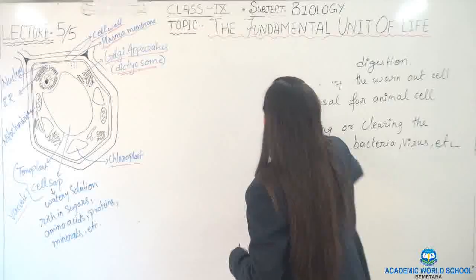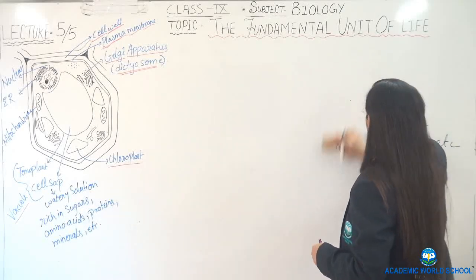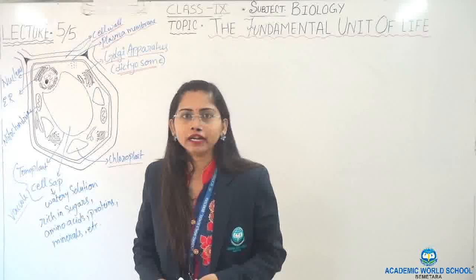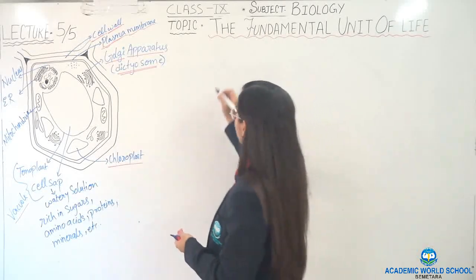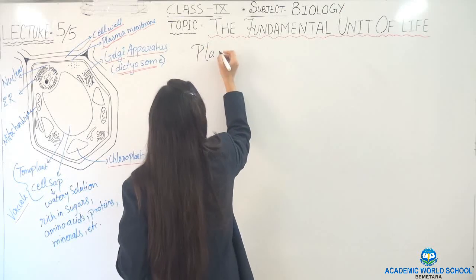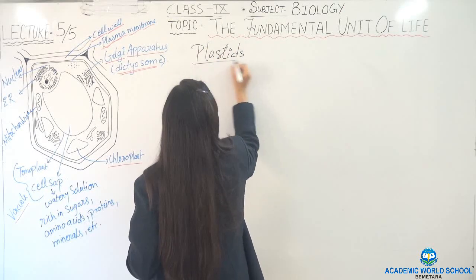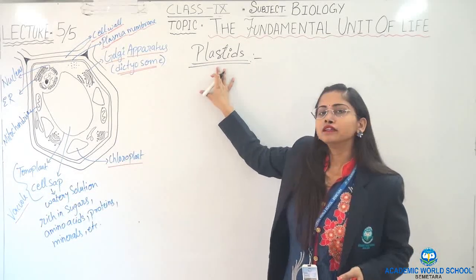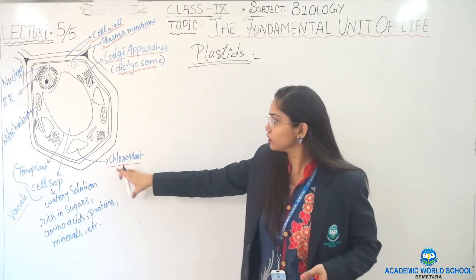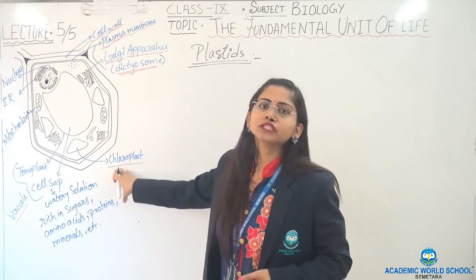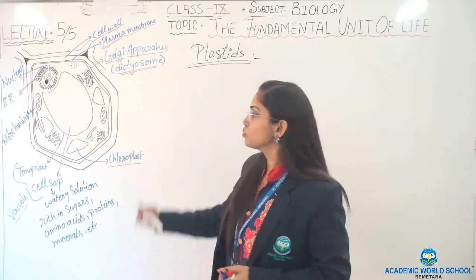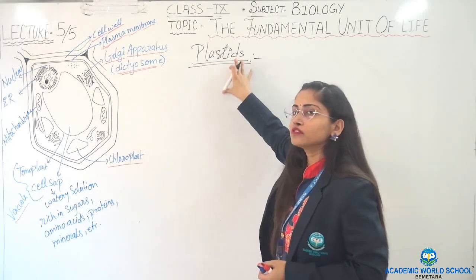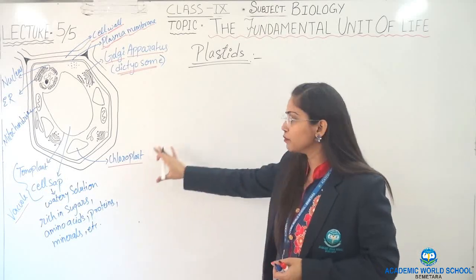The next cell organelle we are going to read is one that is only present in plants, not in animals. That one is the plastid. You might be thinking what is this plastid — here I will put chloroplast. You are aware about the term chlorophyll, which helps the plant to prepare its own food. That chlorophyll will be present inside the chloroplast. The plastid has three different types, and one type is the chloroplast.